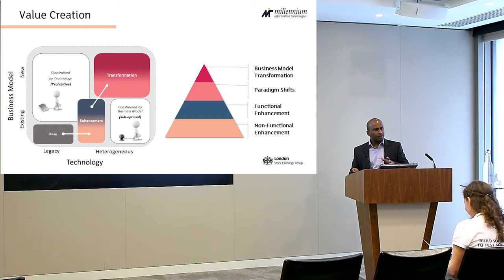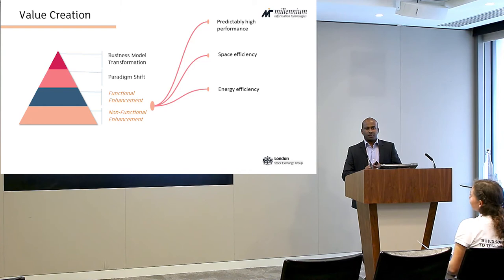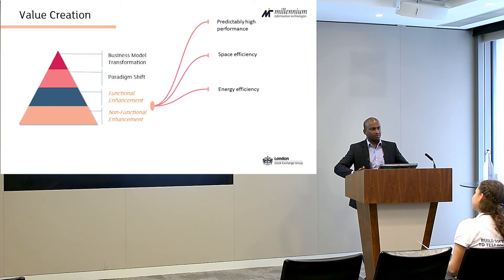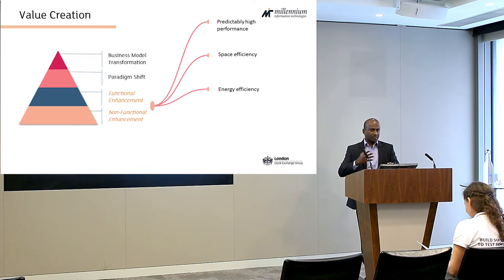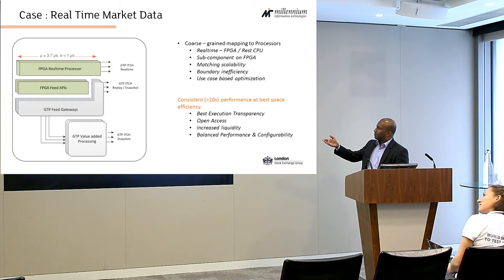Let me give you some examples. At the lowest two levels, you bring heterogeneous computing to an existing business model and expect either a predictably high-performance system, giving you efficiency in the form of space or energy for that performance, or an order-of-magnitude headroom to functionally enhance your business model for the same level of performance. Here's an example we have been working on for LSIG, which is a real-time market data system. It's quite the usual case for hardware accelerators — you get predictably high performance and these benefits within the realms of the current business model by applying heterogeneous computing.